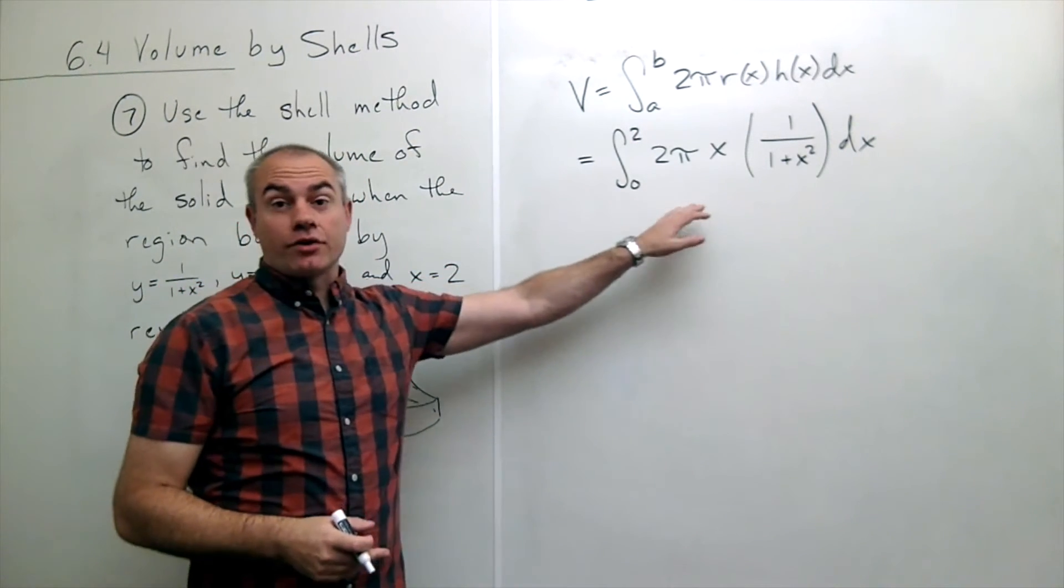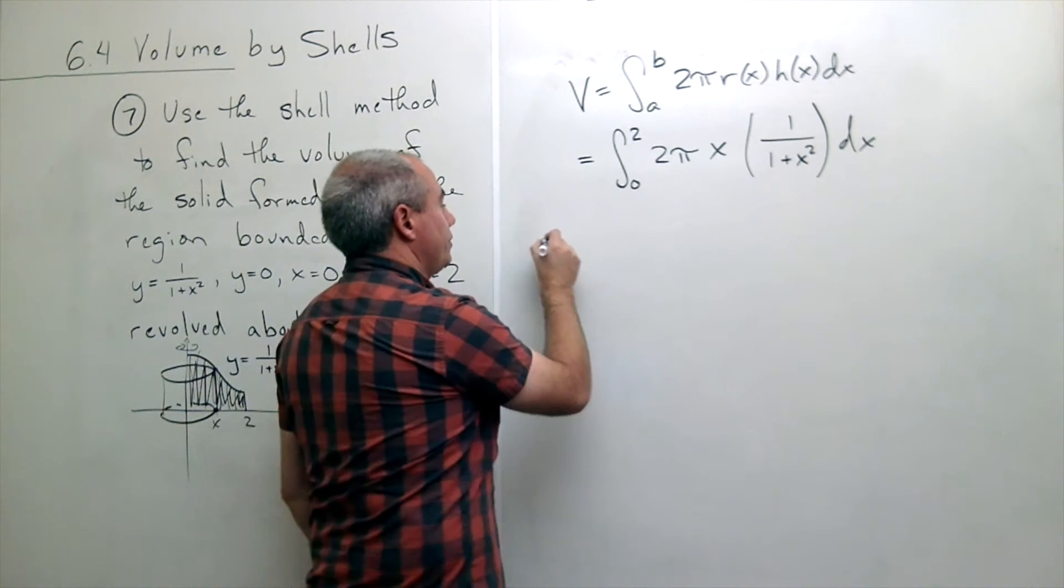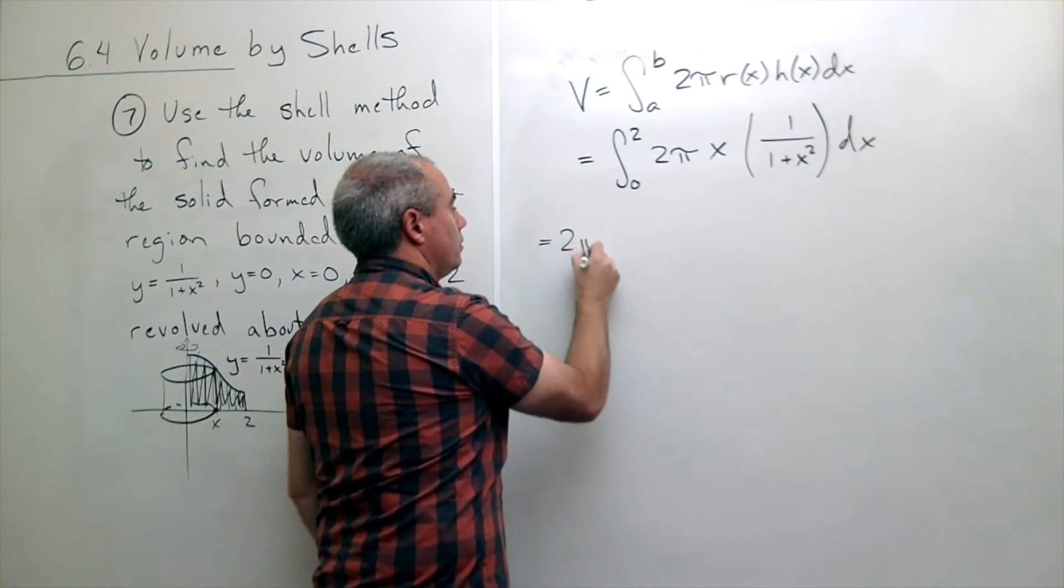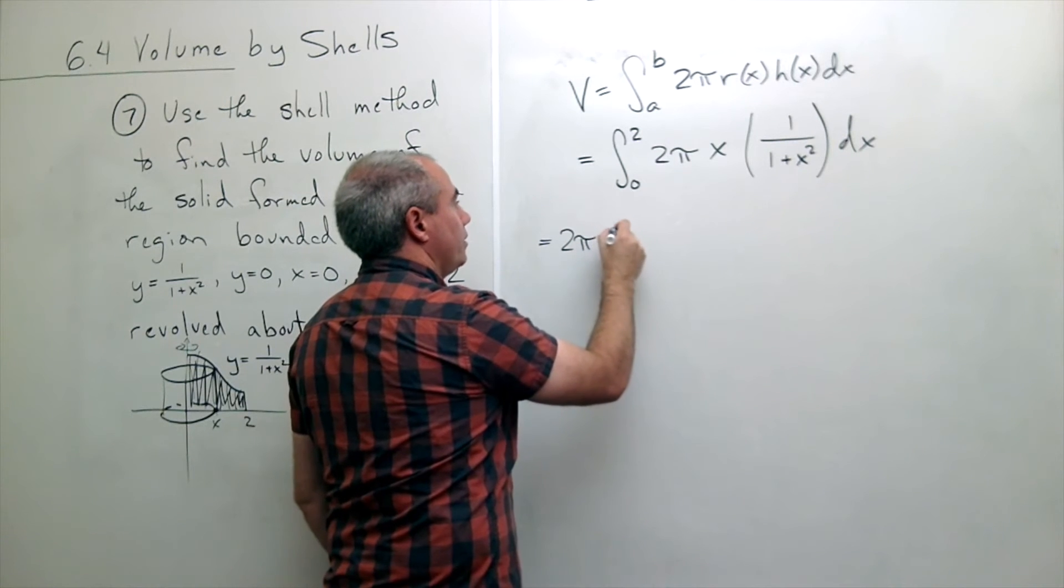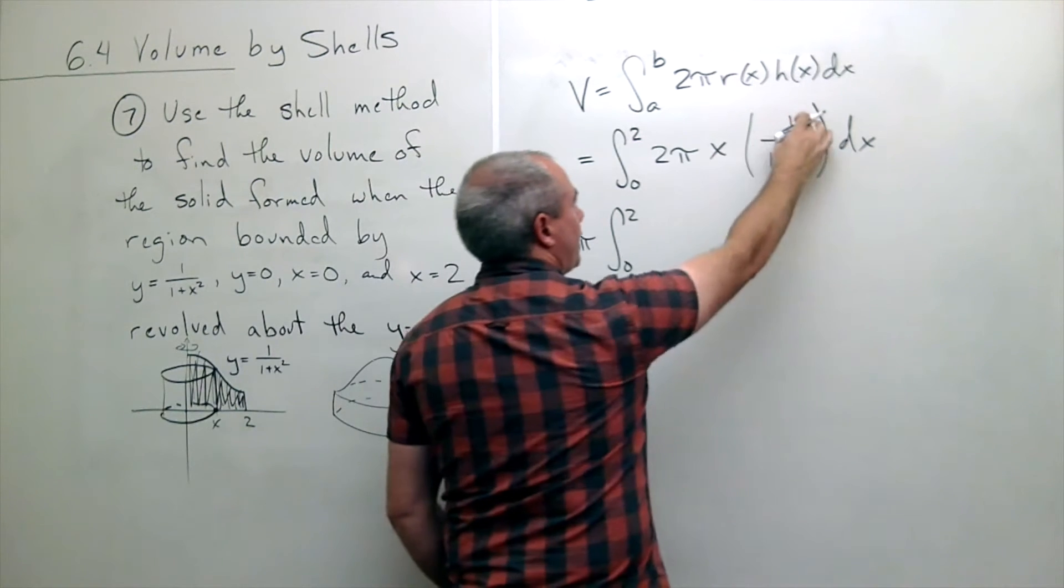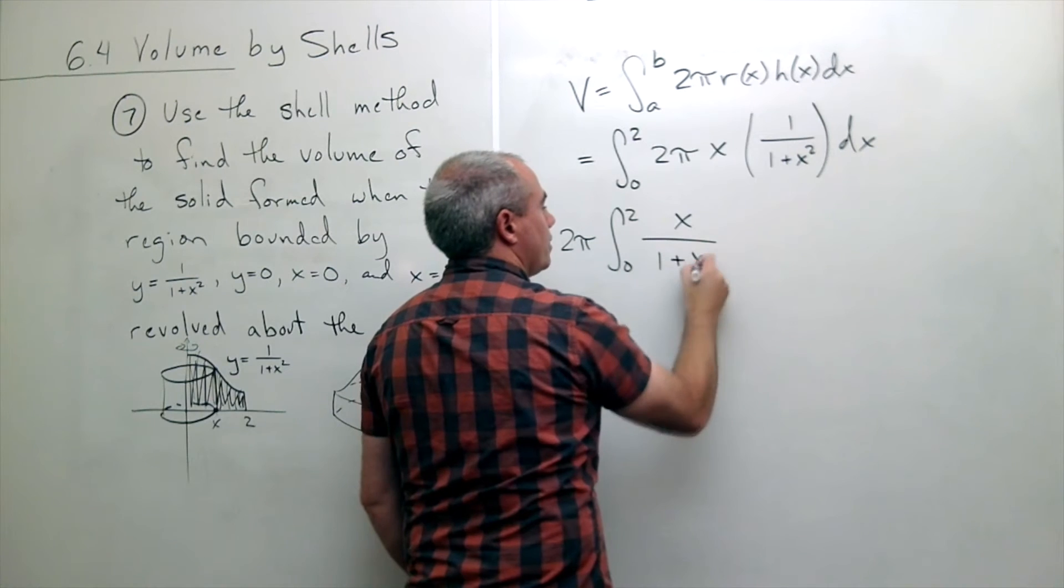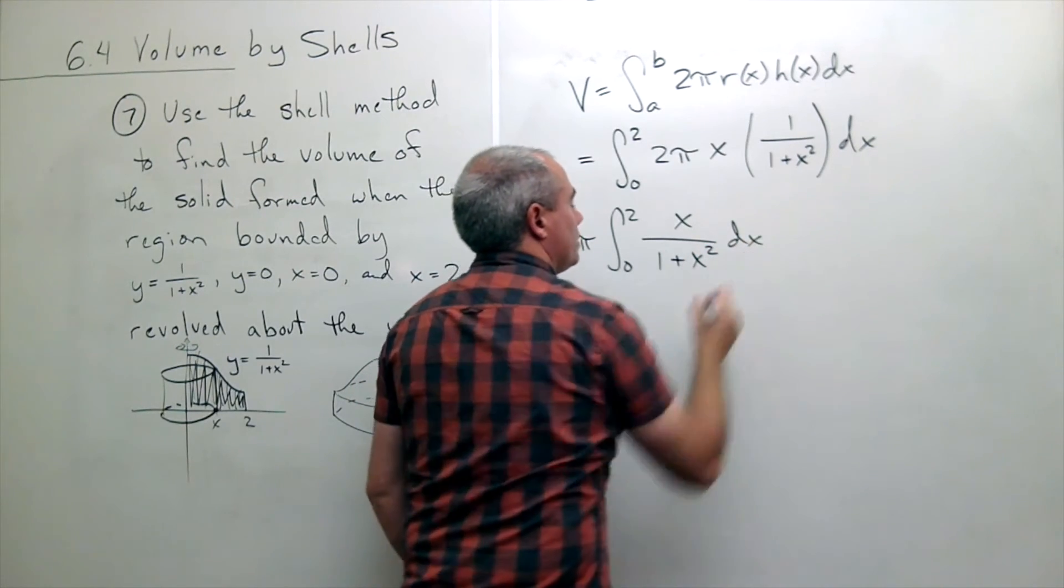So this is the integral that should give me my answer. So let's integrate it. First of all I can pull out the 2 pi. So I get 2 pi integral from 0 to 2 of I'll multiply the x inside and I'll just write it as x over 1 plus x squared dx.